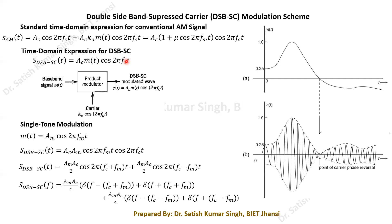The product modulator takes the baseband message signal m(t) and the carrier as inputs and outputs the DSBSC modulated wave denoted as ac·m(t)·cos(2π·fc·t). It is called a product modulator because its function is to give the multiplication of the two incoming signals.